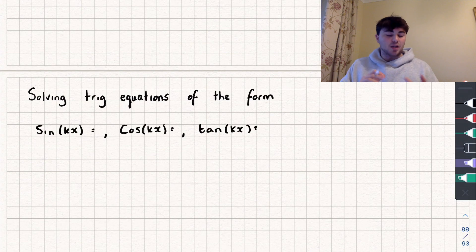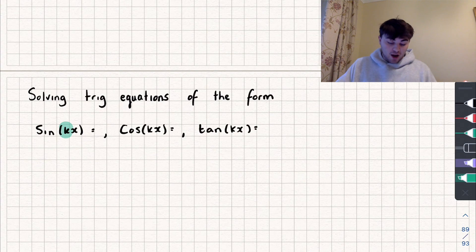Now the difference between these and something like sine of x equals a half is that we're applying a transformation to the graph. By multiplying x by this value k, which is just a number, we're either squishing the graph so it's more compact, or we're stretching it out.